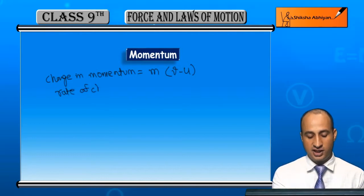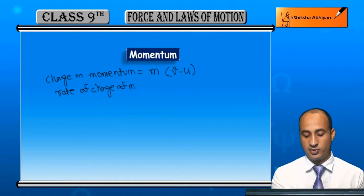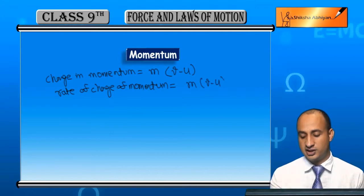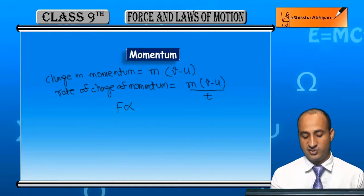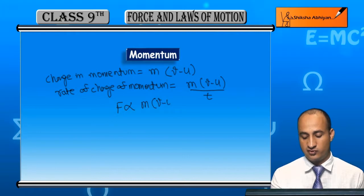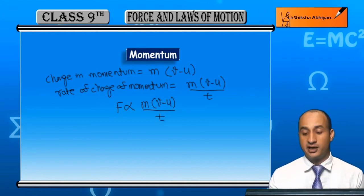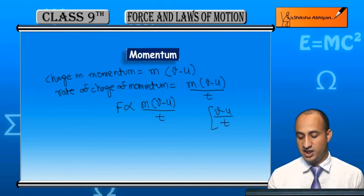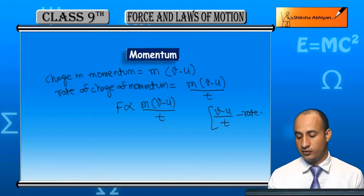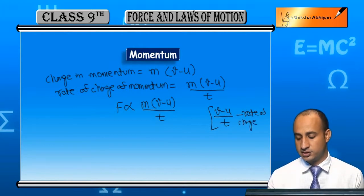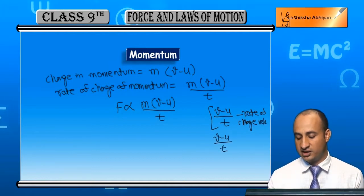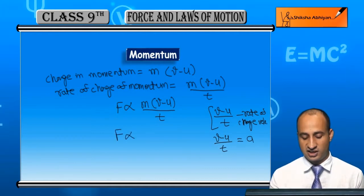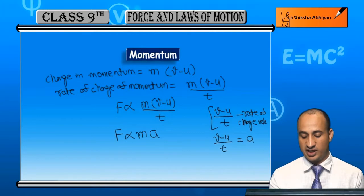Rate of change of momentum kya ho jaayega? Rate of change of momentum = m(v - u) upon t. Ab yeh rate of change of momentum directly proportional to force hai, yani force is directly proportional to m(v - u)/t. Ab v minus u by t kya hai? Change in velocity upon time — rate of change in velocity — jo ki acceleration hai: v - u / t = acceleration (a).